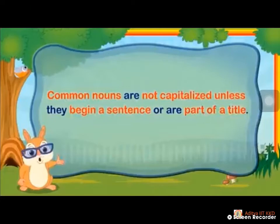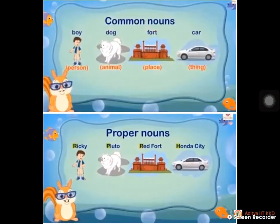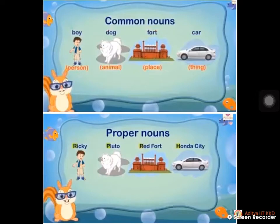This has to be observed and remembered by you. You can make a comparison with these two pictures. Common noun: boy — proper noun: Ricky. Dog — proper noun: Pluto. Place: fort — proper noun: Red Fort. Thing: car — proper noun: Honda City. In common noun they have told in a general manner; in proper noun they have made specification. Capital letters are highlighted here and those have to be observed carefully.